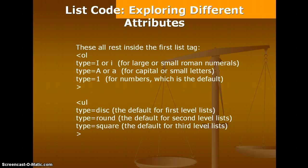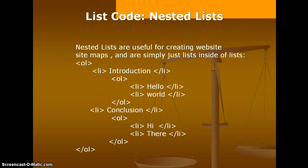We can also explore the different attributes inside the first list tag. Type equal to capital I means large Roman numerals, and small i means small Roman numerals. Type equal to capital A means capital letters, and small a means lowercase letters. Type equal to 1 is the default for an ordered list, representing items numbered 1, 2, 3, 4, 5, 6. We can also change the starting value — if we want the first item to start at number 5, we define that, and then the next item increments by 1, so 5, 6, and so on.